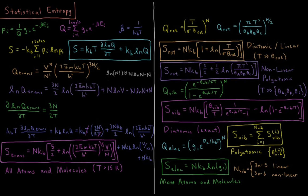According to Stirling's approximation, the logarithm of N factorial equals N log N minus N for large N. Since Avogadro's number of particles is a very large N, this is a very accurate approximation. So the natural log of q_trans equals (3N/2) log(2π m kT / h²) plus N log V minus N log N plus N, because we have the log of 1 over N factorial, which is minus log N factorial.